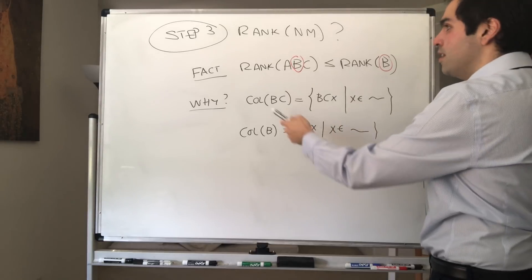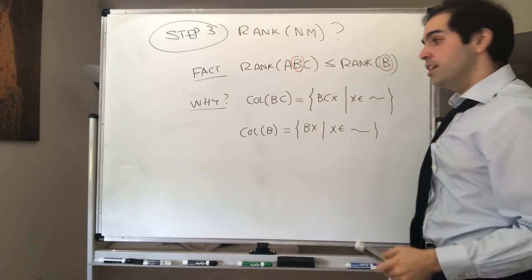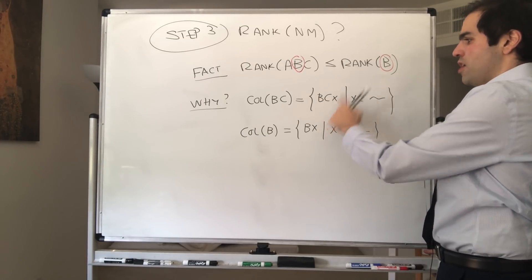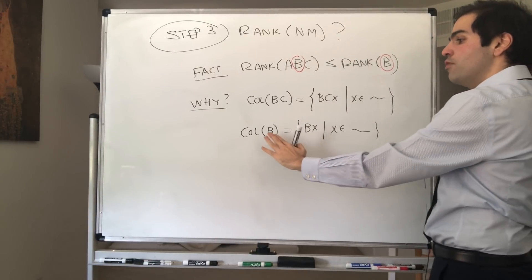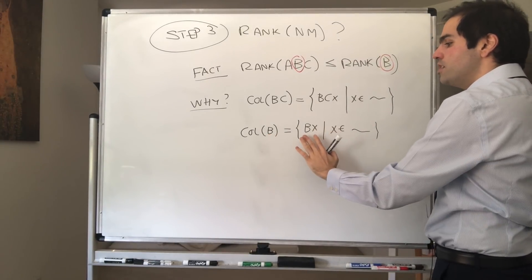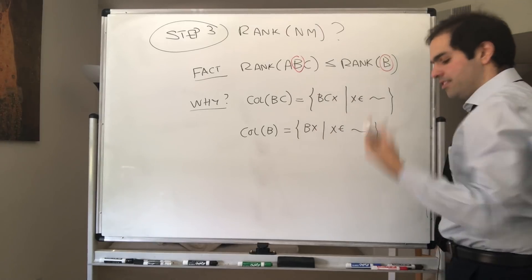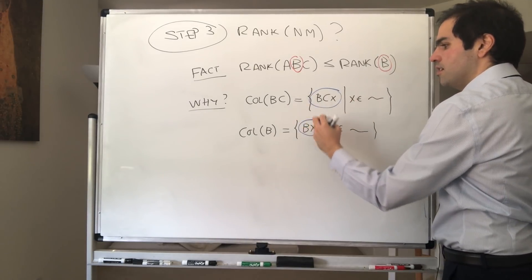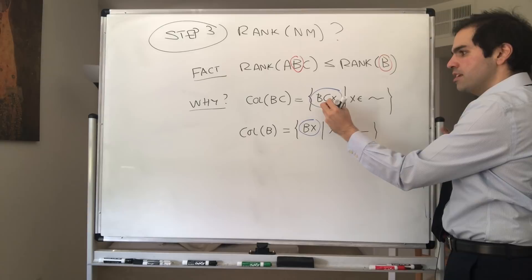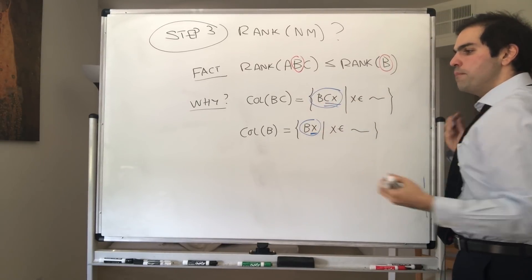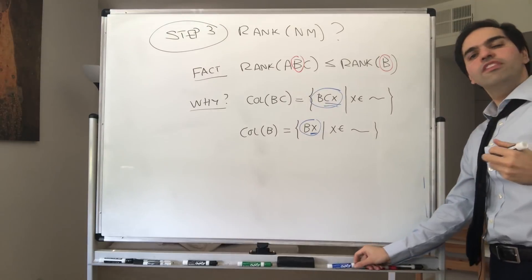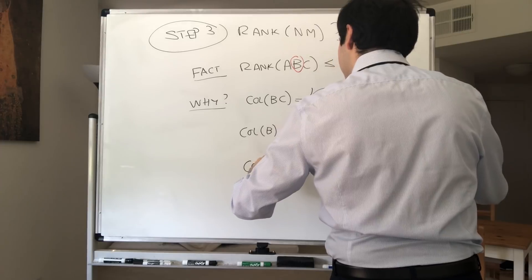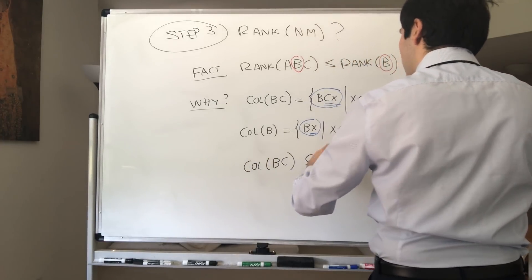And here's why this is true. Alright, notice the following. On the one hand, we have the column of BC, column space of BC, which is just a set of vectors of the form BCX, where X is in whatever space there is. On the other hand, we have the column space of B, which is the set of the form BX, where X is in whatever space. Notice, this is more specific than this, because if you have the form B times CX, then you're in the form B times something.